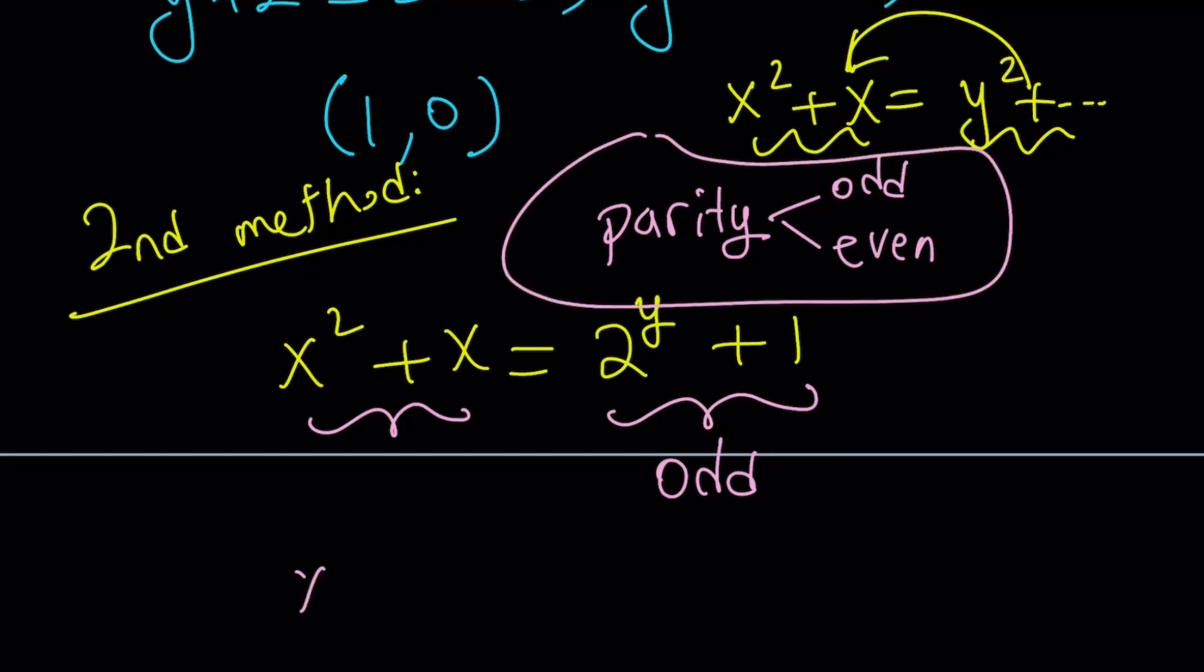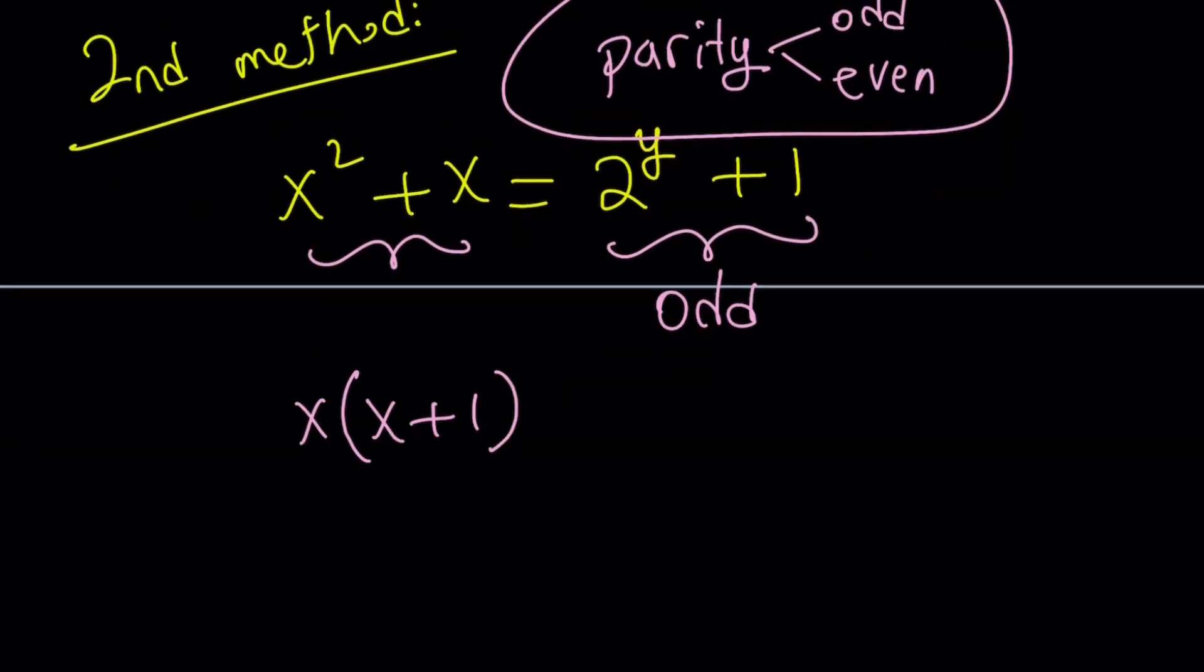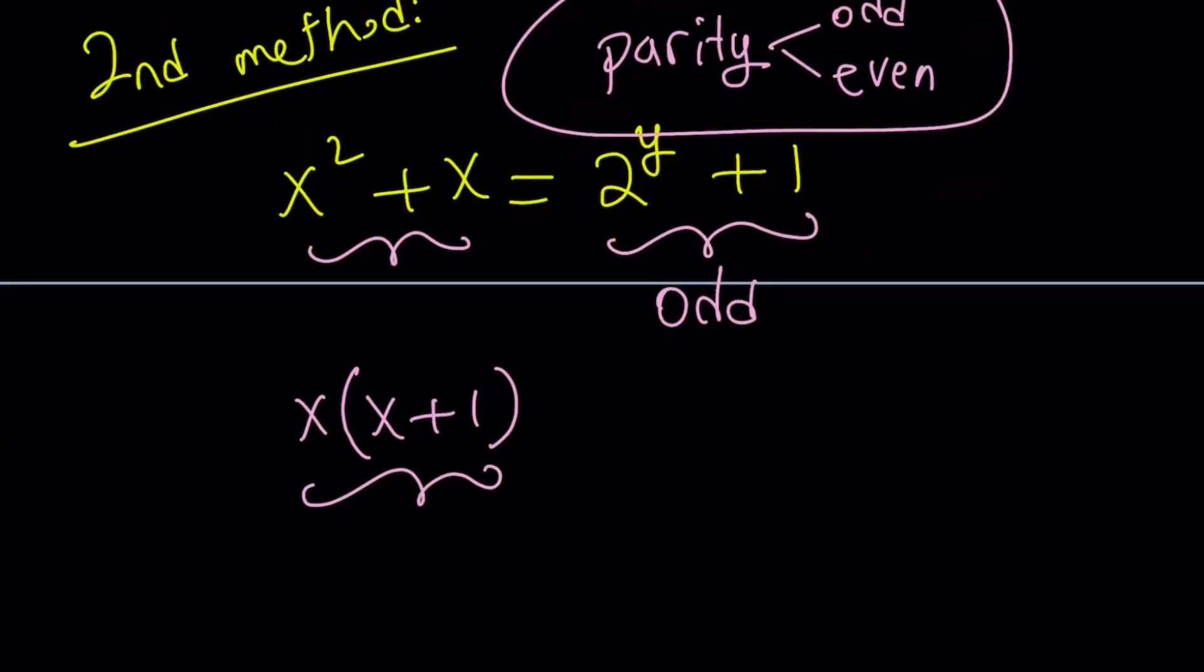But x squared plus x can be factored like this. And these are the product of two consecutive integers. Uh-oh. That has to be even. Why? Because even times odd. One of the numbers have to be even. So even cannot equal odd. And yes and no, if we can make this even, that would be nice. And we can.